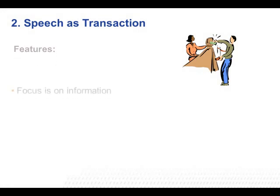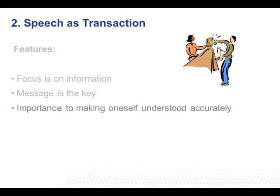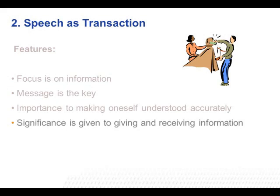The features are: the focus is on information. Message is the key. The body of the message plays a significant role in ensuring that the information is given out correctly. Importance to making oneself understood accurately becomes paramount as the entire outcome is dependent on the understanding, and hence significance is given to giving and receiving information. Communication strategies such as negotiation and digression are employed here.